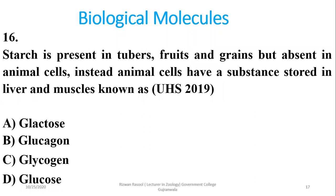Question 16: Starch is present in tubers, fruits, and grains. However, in animal cells they store a parallel substance in muscles and liver known as glycogen.